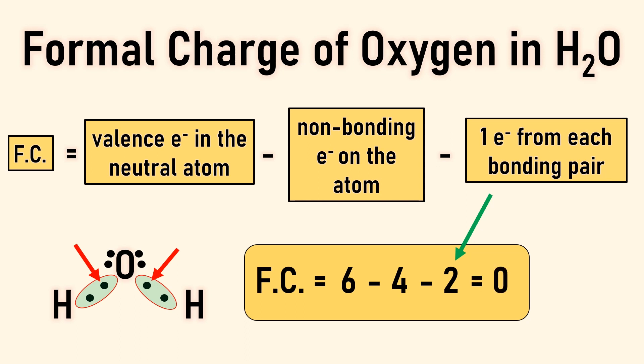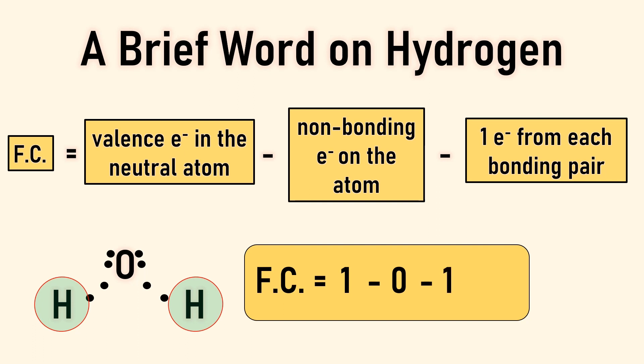Before moving on, it's worth taking a moment and discussing the formal charges on hydrogen in molecules. Simply put, the formal charge will always be zero for hydrogen when hydrogen forms a covalent bond. You can see here that hydrogen can only form one covalent bond because it follows the duet rule. It can only accommodate an electron pair.